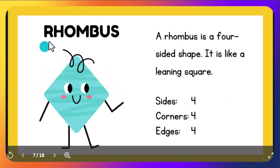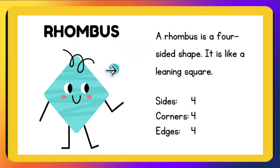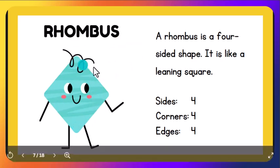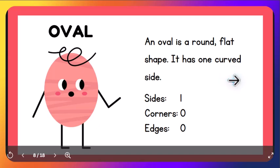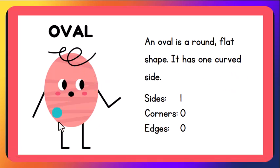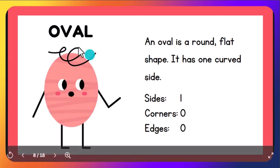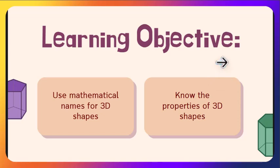Rhombus. A rhombus is a four-sided shape. It's like a leaning square. It also has four sides, four corners, and four edges. Oval. An oval is a round flat shape. It has a curved side. It has only one side, no corners, and no edges.